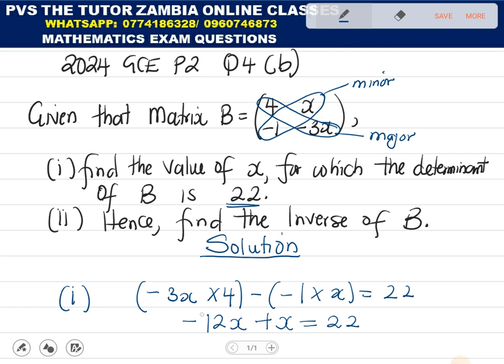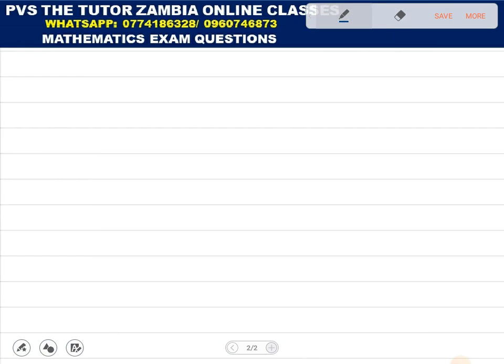But 12x is having a negative. So subtract them and maintain the sign from the bigger number. So we end up getting negative 11x, giving us 22. Then you can divide. You get x is negative 2. That's the value of x.